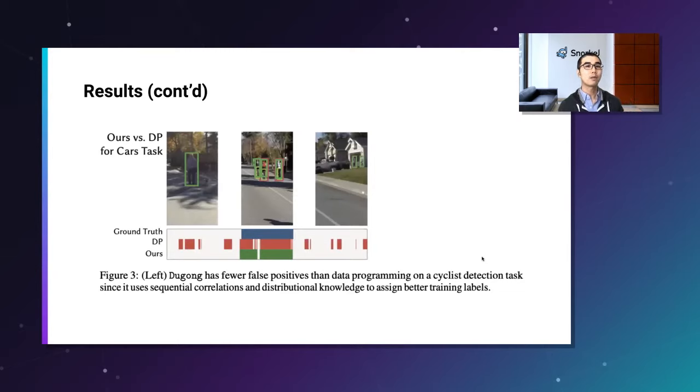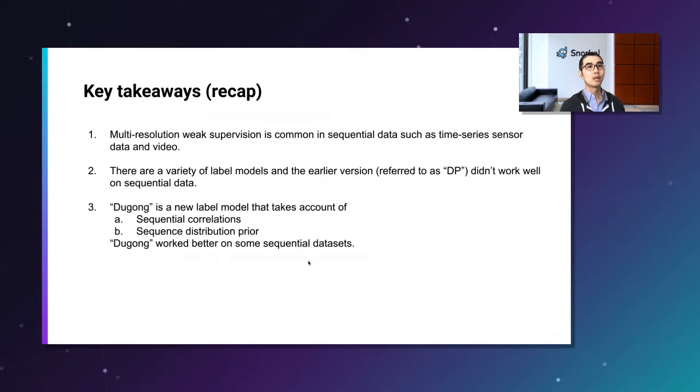This is another perspective of the result. Because DP, or data programming, the earlier version label model, doesn't assume any distribution prior. Their positive prediction could appear at any element. It seems like this was the case in this example. But Dugong has a mechanism to incorporate distribution prior. It captures very good positive prediction with respect to ground-truth labels.